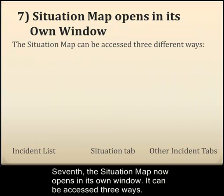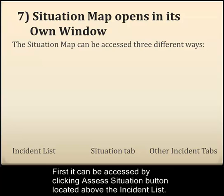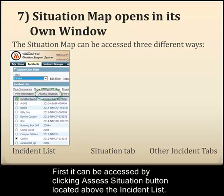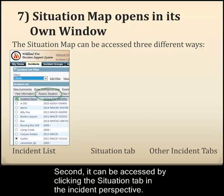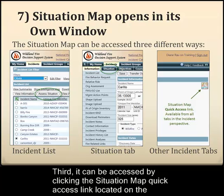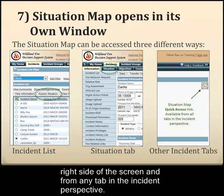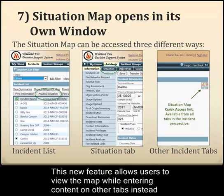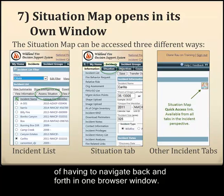Seventh, the situation map now opens in its own window. It can be accessed three ways: by clicking the Assess Situation button located above the incident list, by clicking the Situation tab in the Incident Perspective, or by clicking the Situation Map Quick Access link located on the right side of the screen from any tab in the Incident Perspective. This new feature allows users to view the map while entering content on other tabs instead of having to navigate back and forth in one browser window.